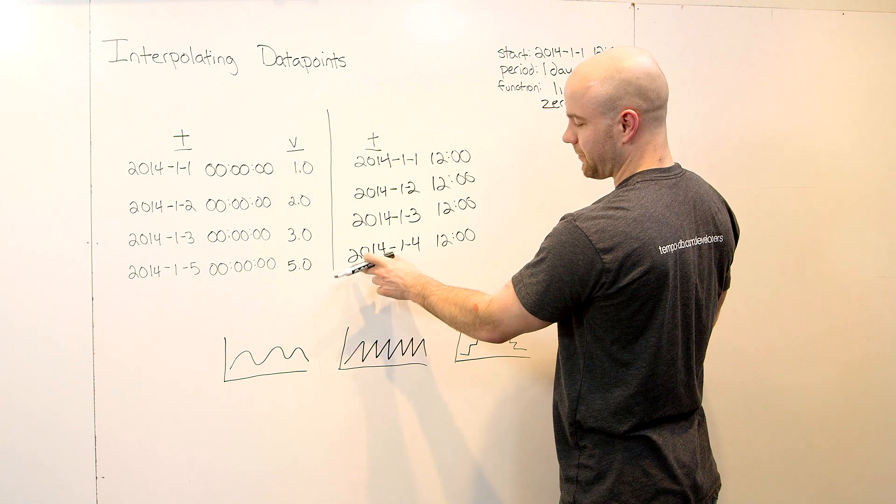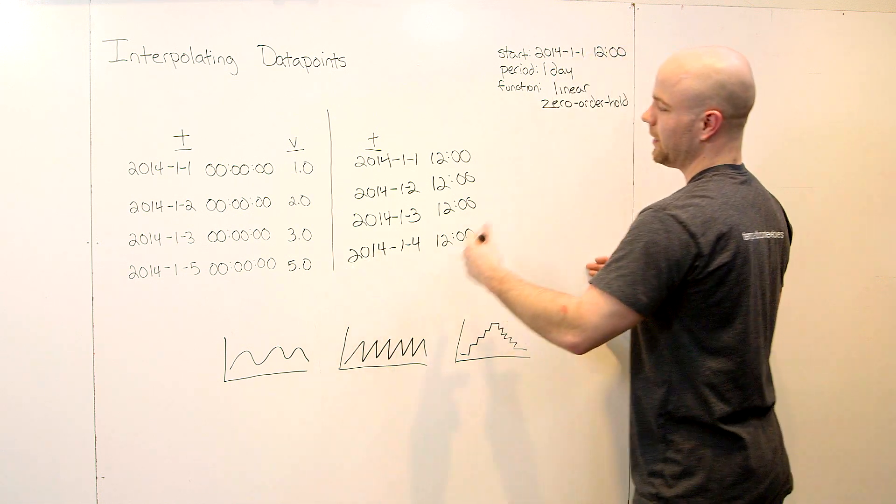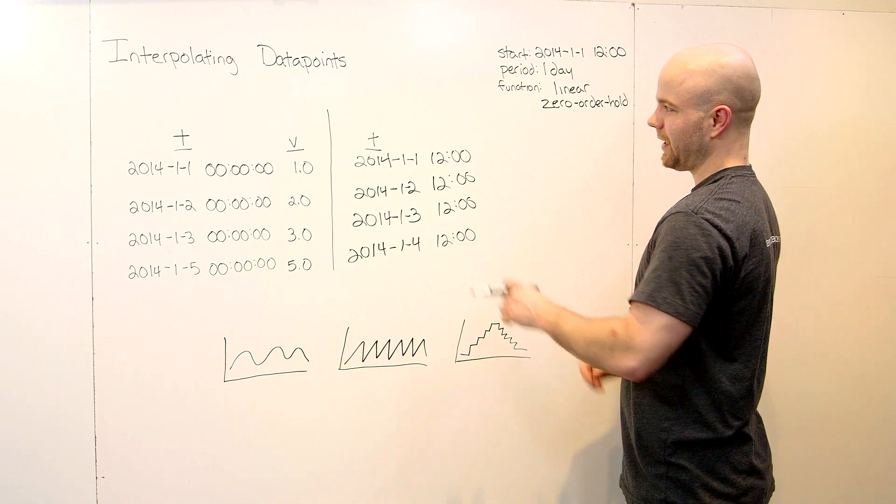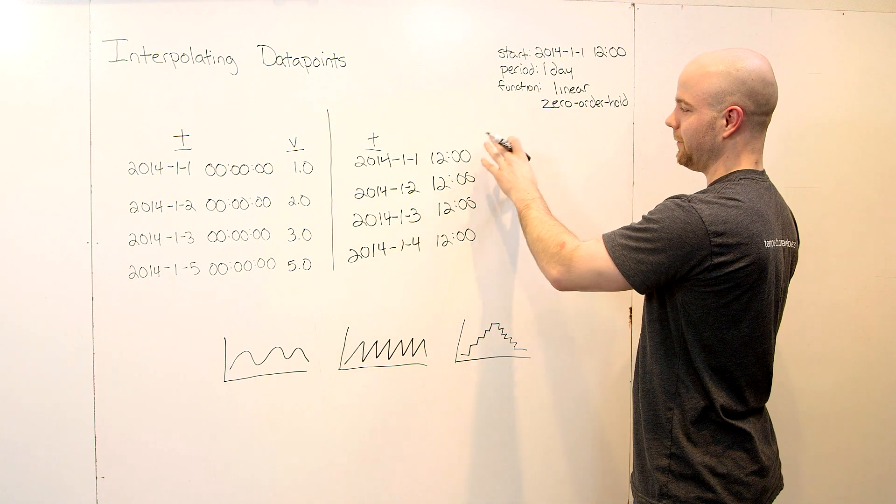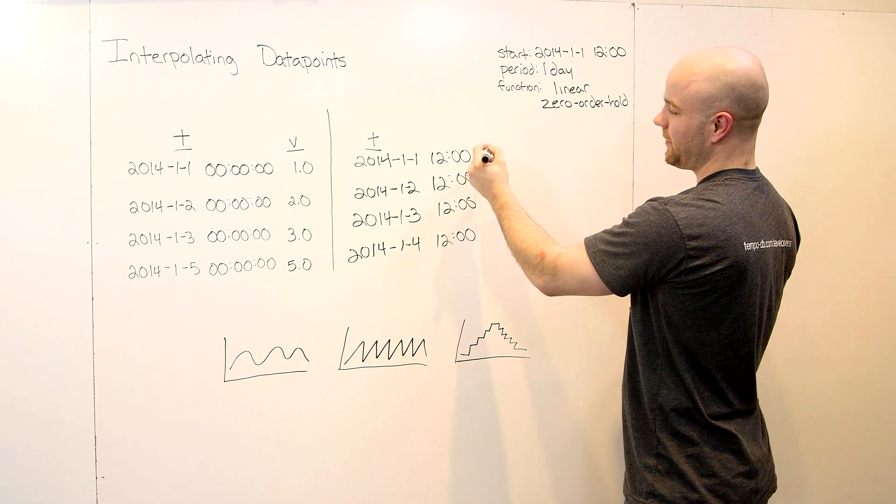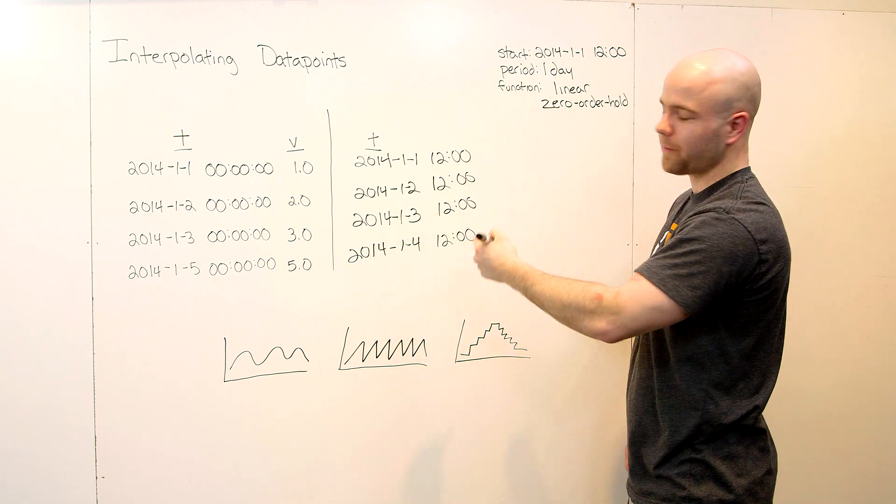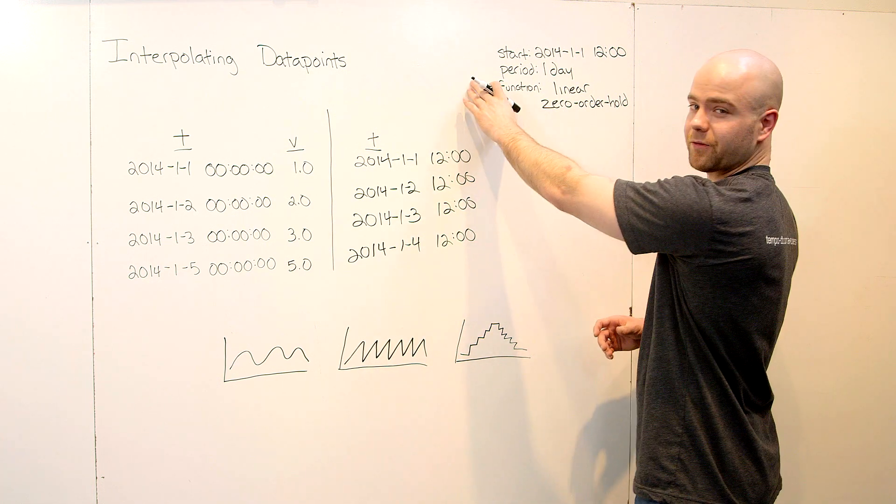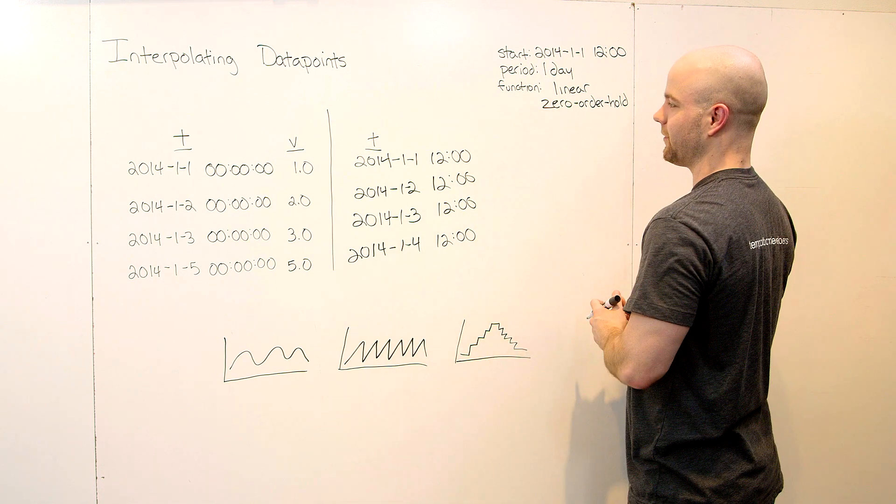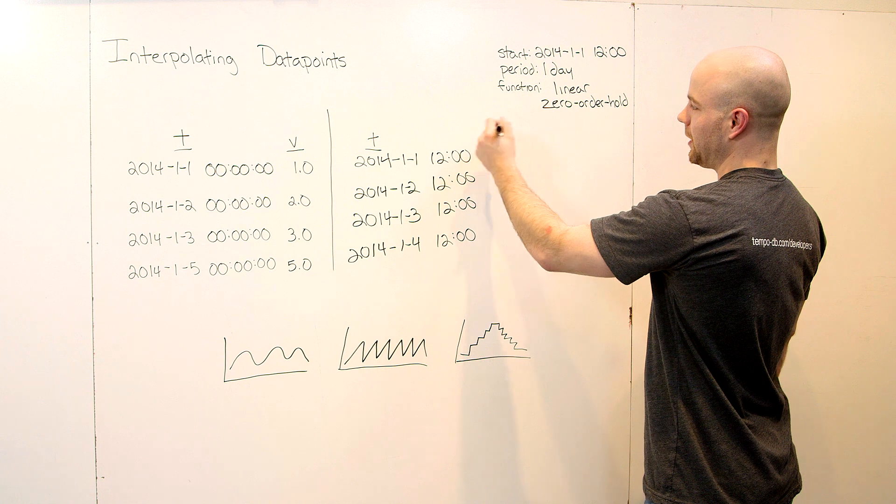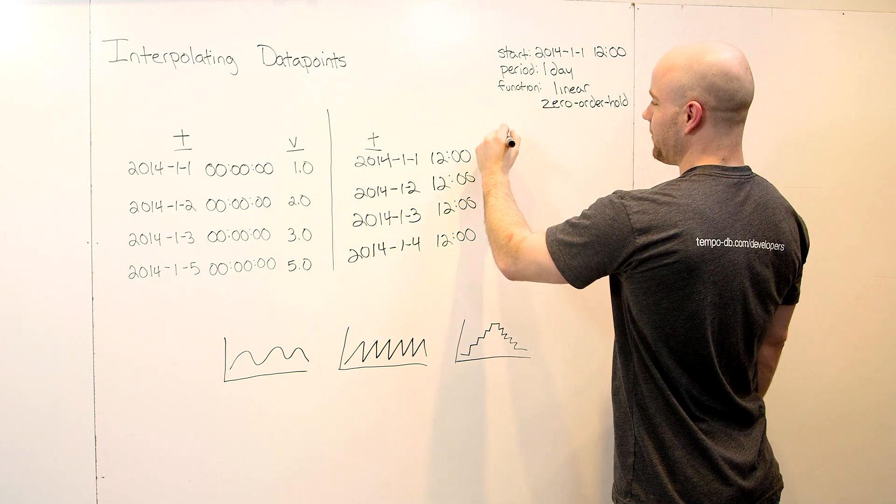That's the example of this created data point here. It's important to emphasize that interpolation is a transformation of your data. What's really cool about it is that it happens before any other roll-ups or other analysis that you want to run. You can combine this with roll-ups and other analysis functions that TempoDB provides, aggregations, and so forth. But it is a transformation, so you have to keep that in mind.